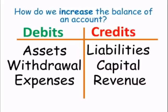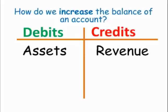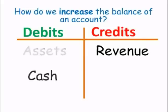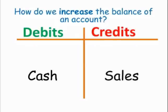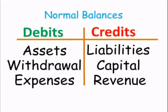Debits increase asset, withdrawal, and expense accounts, while credits increase liability, capital, and revenue accounts. An example of an asset account is cash, and an example of a revenue account is sales. This all has to do with normal balances — click on the link below to watch my video on normal balances.